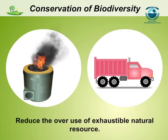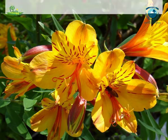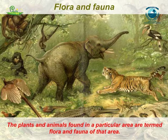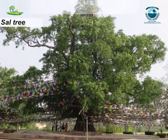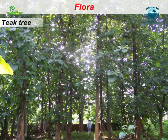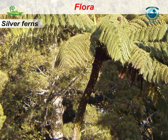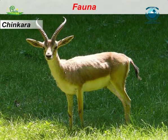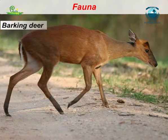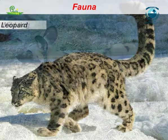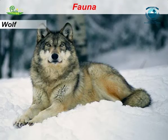Flora and fauna: the plants and animals found in a particular area are termed the flora and fauna of that area. Sal, teak, mango, jamun, silver ferns, etc. are the flora of Panchamari reserve. Chinkara, blue bull, barking deer, cheetal, leopard, wild dog, wolf, etc. are examples of the fauna existing there.